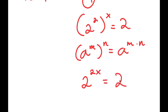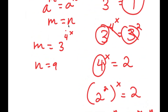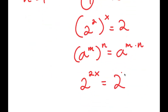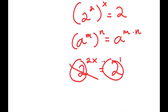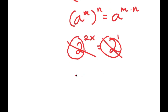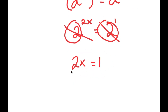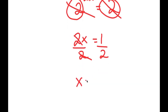So 2 to the power of 2x is equal to 2. Now 2 is the same thing as 2 to the power of 1, so because these two bases are the same, I get 2x is equal to 1. Dividing both sides by 2, I get x is equal to one half.